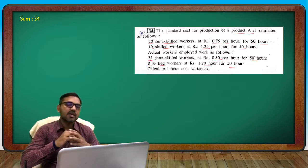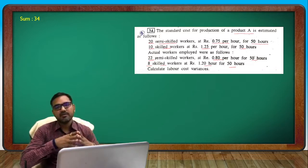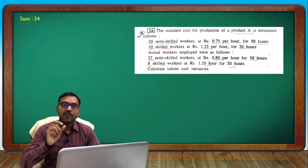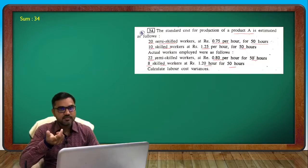Hours is considered along with number of labor. To calculate total labor hours, we need workers multiplied by hours — the number of workers into hours worked.